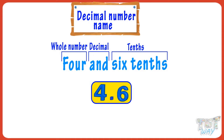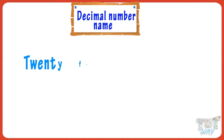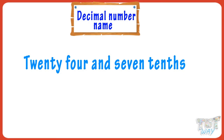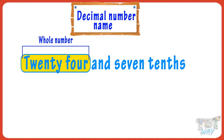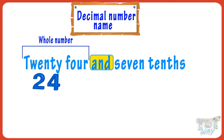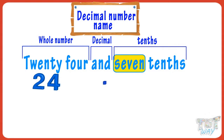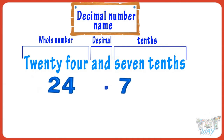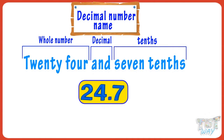Now let's take another example: twenty-four and seven tenths. We have to convert it to its standard form. The number before 'and' is the whole number, just write it as it is — write twenty-four. Now we know 'and' means decimal point, so put a decimal. Seven tenths means seven is the first digit after the decimal point. So our number became twenty-four point seven.